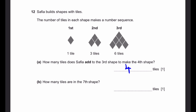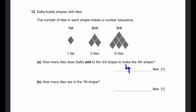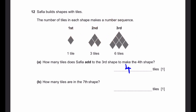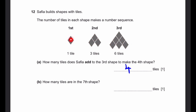Now, B — how many tiles are in the seventh shape? This sequence is actually going to be the triangular number sequence. These shapes kind of resemble a triangle, because you're adding one here, then two more, then another three more, and so on. It resembles a triangle.